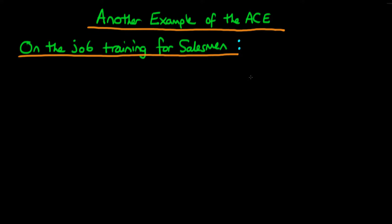In this video I wanted to provide another example of what we mean by the average causal effect. The example I'm going to be talking about is the effect of on-the-job training for salesmen. If you own a firm, what you might be interested in is what is the causal effect of on-the-job training on the level of sales which a given salesman achieves.